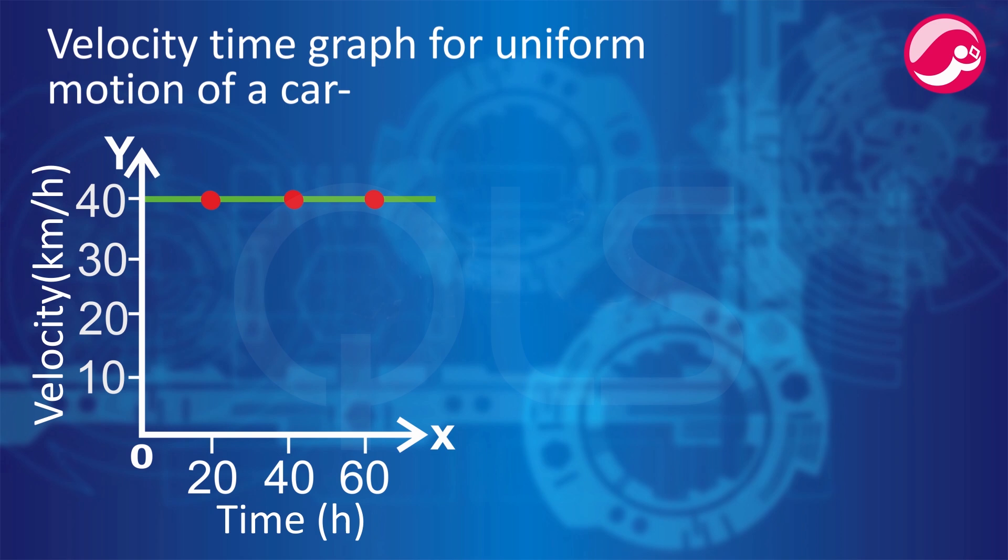Now we know that V into T is displacement for an object moving with uniform velocity. So in this graph, the area covered by the graph, that is the area between velocity and time, will be the magnitude of displacement.